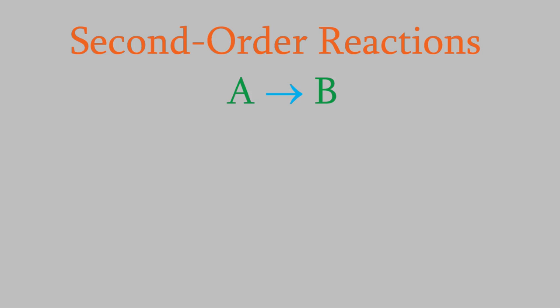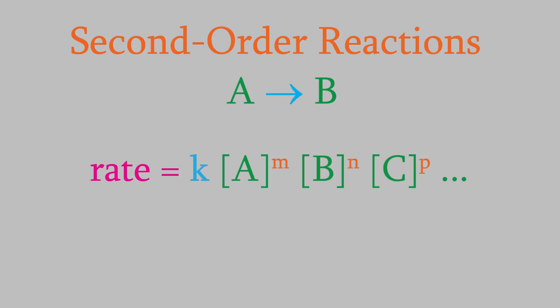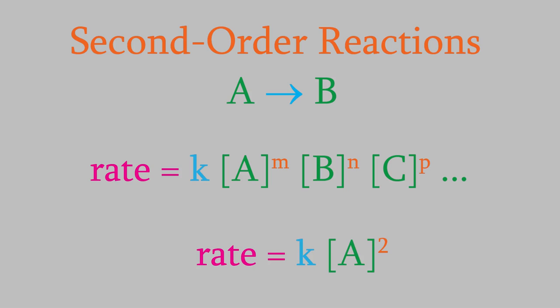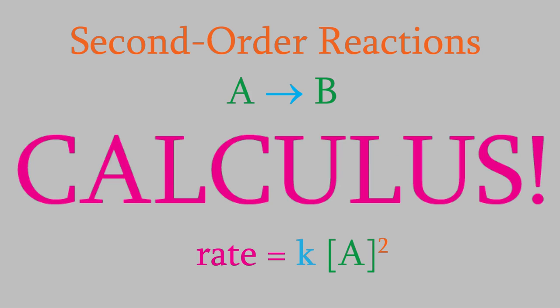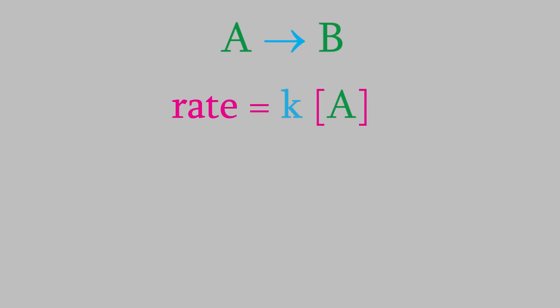From our previous discussion, you know that the rate law will be rate equals k times the concentration of each reactant raised to an exponent. Since this reaction only has one reactant, A will be the only reactant in the rate law. Also, since we know this is a second order reaction, the exponent is 2. Just as we did with first order reactions, we want an equation that connects the reaction time to the concentration of the reactant that still remains. We'll start with the rate law: rate equals k times the concentration of A to the second power.